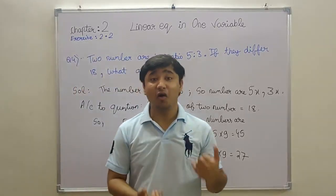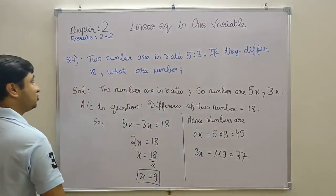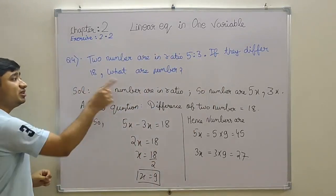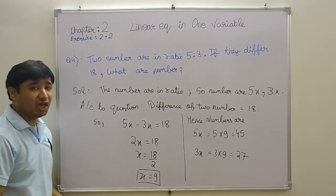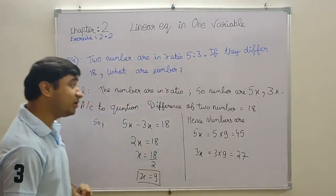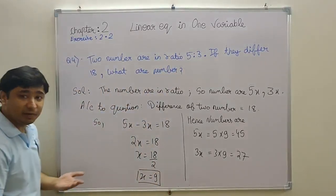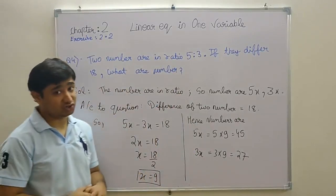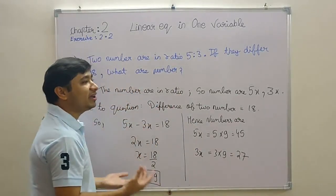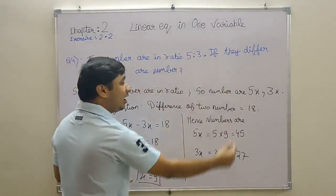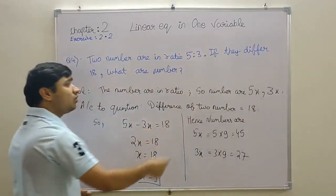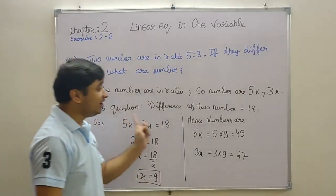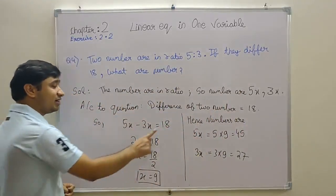So let's move ahead to the next question, that is question number 4. Two numbers are in ratio 5:3. If they differ by 18, what are the numbers? Pay attention, when ratio comes, I really like ratio problems. When ratio comes, we have to consider the numbers as 5x and 3x, like 5:3. We are studying linear equations in one variable, so we have to take a variable somewhere. So when ratio comes, we take it as 5x and 3x. Read the question carefully: they differ by 18, meaning the difference between the two is 18.